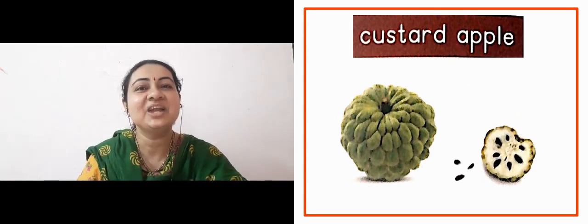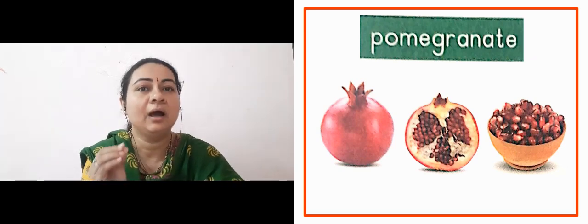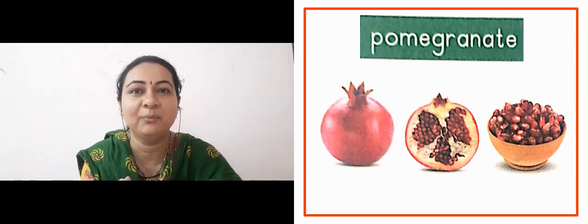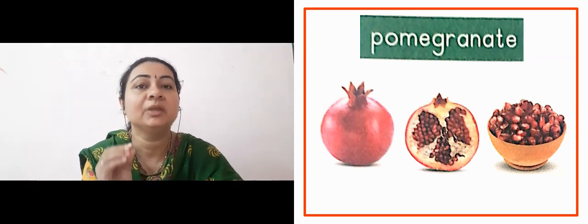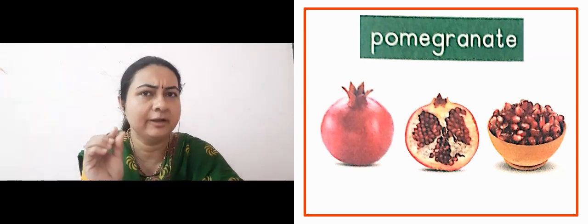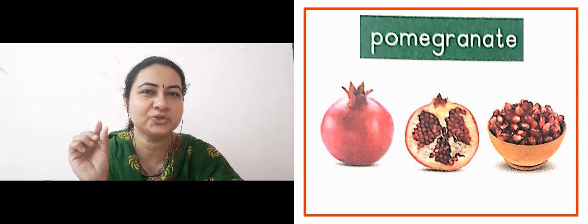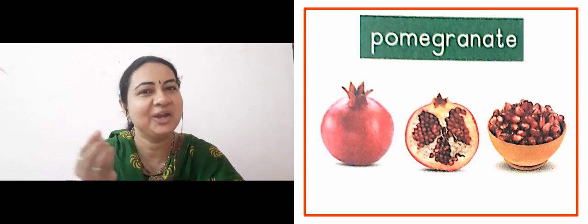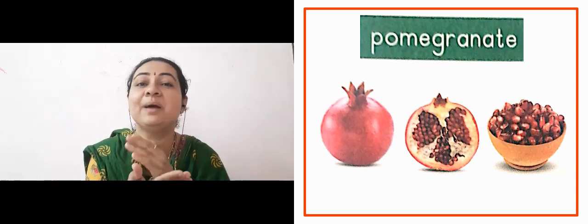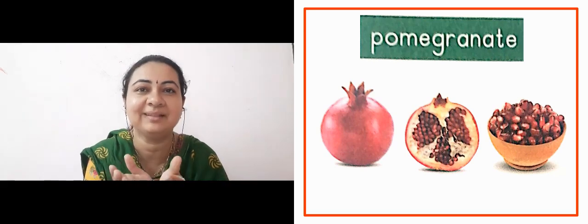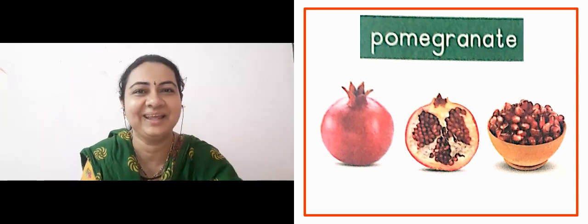Its ice cream also tastes very good. The next lady is showing us pomegranate — we call it anaar. Dear children, it has small red color seeds shown inside — tiny little grains. We eat those. When we peel it, we take out the grains and eat them.